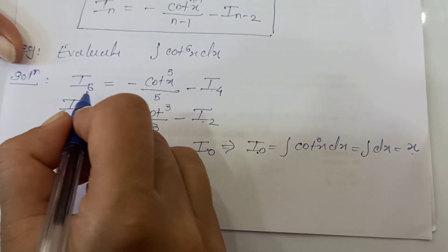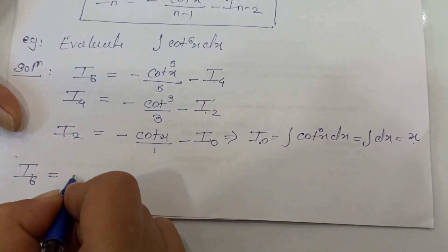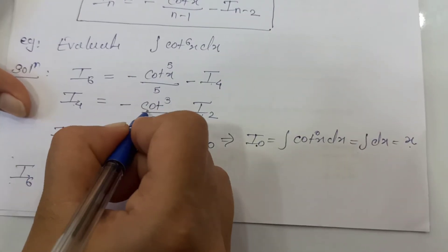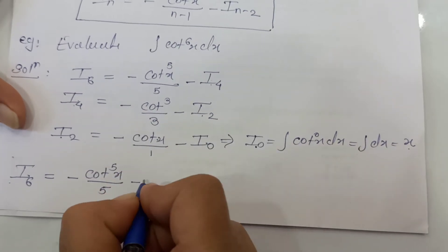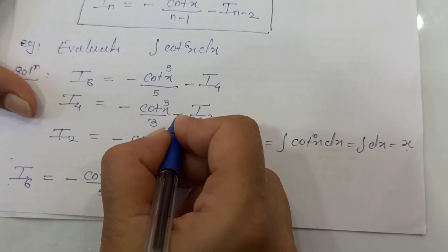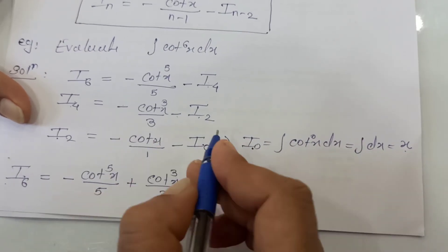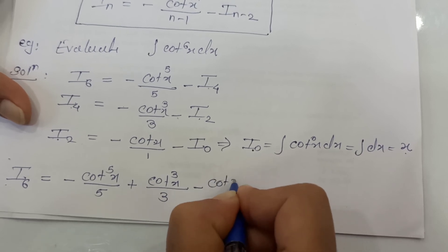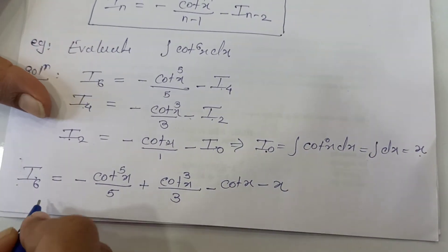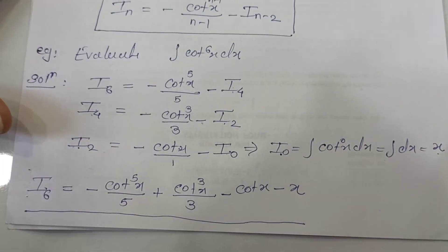Using back substitution, I₆ equals minus cot raised to 5x upon 5, then minus I₄. The value of I₄ is minus of the bracket, so minus minus becomes plus: plus cot raised to 3x upon 3. The sign becomes plus for I₂ as well. Substituting I₂ equals minus cot x minus x, the final answer for I₆ is minus cot raised to 5x upon 5, plus cot raised to 3x upon 3, minus cot x, minus x, plus a constant.